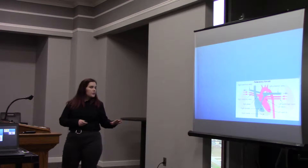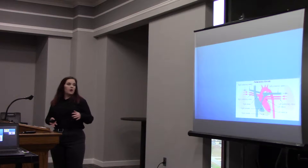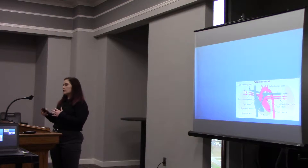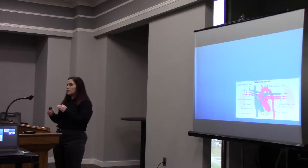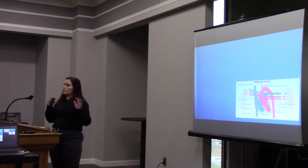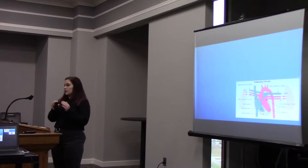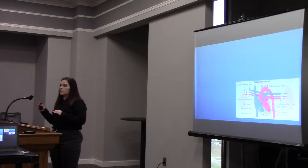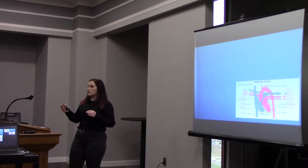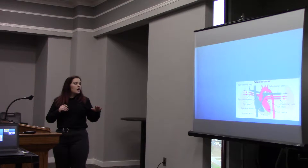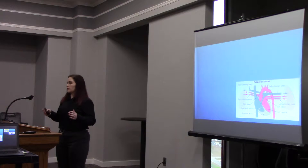I'd like to go over mammalian circulation. Mammals have a four-chamber heart: a right atrium, a right ventricle, a left atrium, and a left ventricle. The right side of the heart is typically devoted to sending deoxygenated blood to the lungs, and the left side is devoted to sending oxygenated blood from the lungs to the rest of the body. Deoxygenated blood enters the right atrium from the veins, moves to the right ventricle where it's pumped to the lungs, undergoes gas exchange, and then enters the left atrium through the pulmonary veins, moves to the left ventricle, and is pumped through the aorta to the rest of the body.